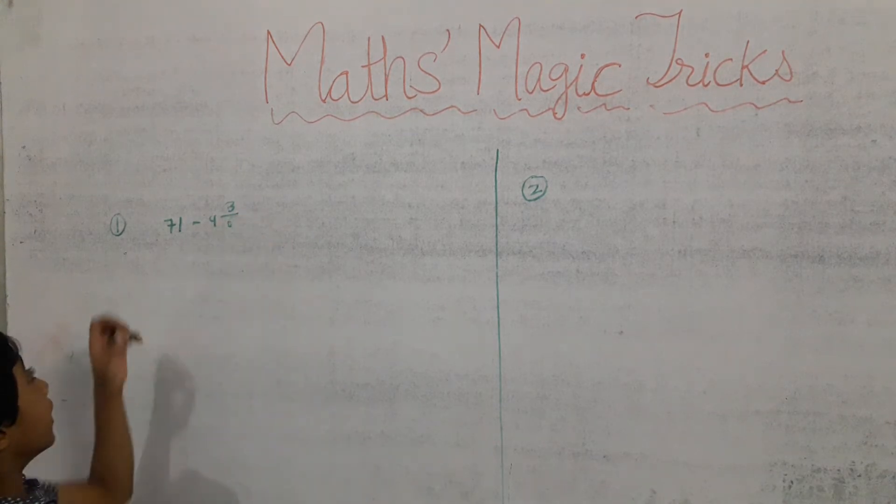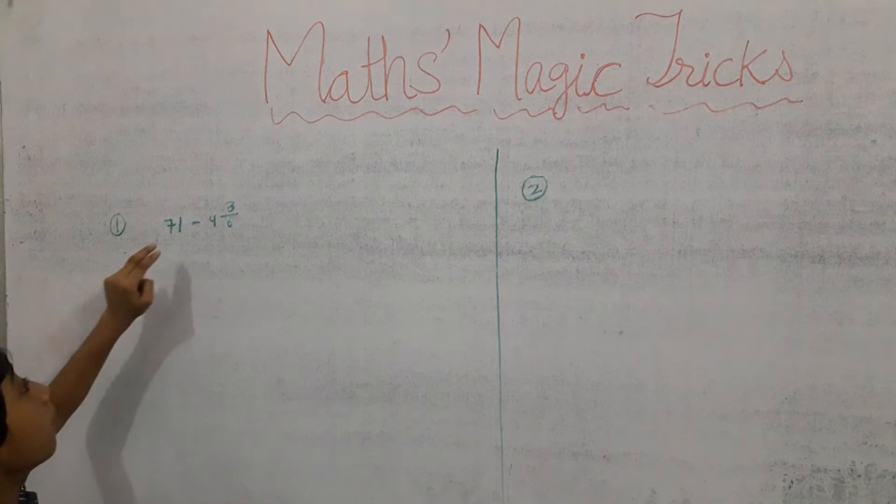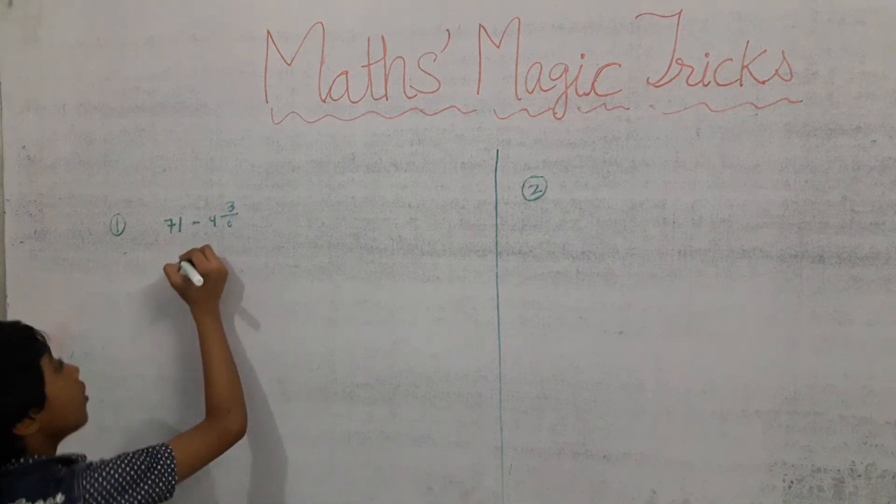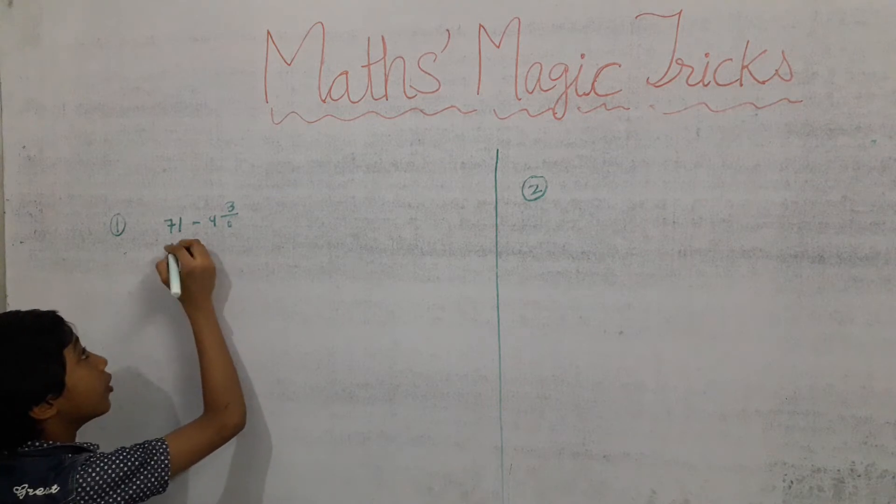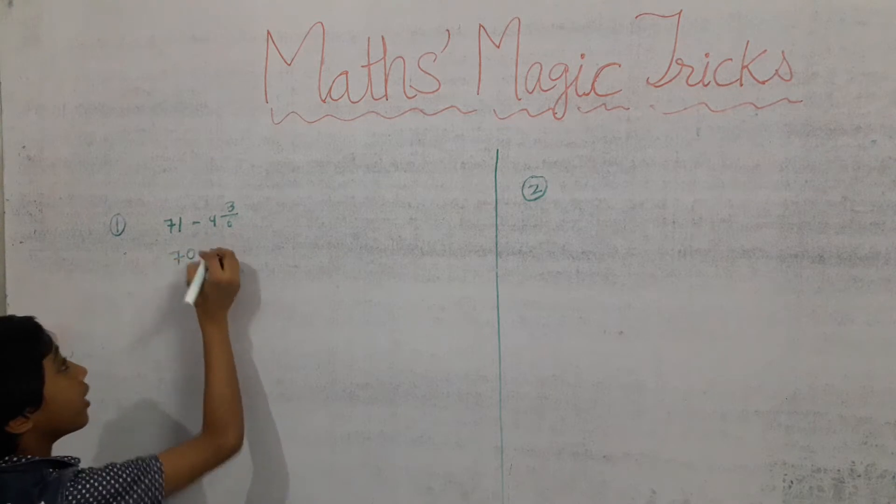So first we complete the number. First we make this number a mixed fraction. So usually minus seventy-one with one is seventy.